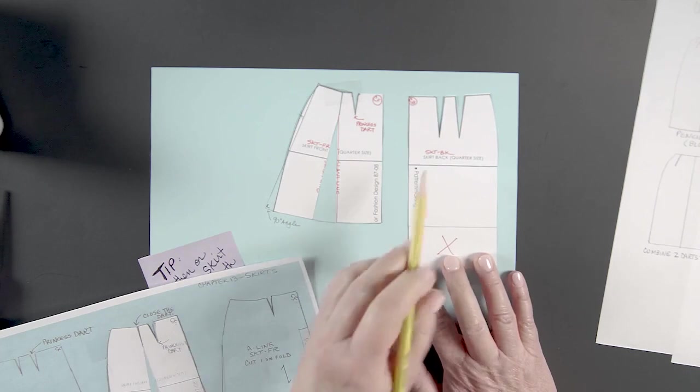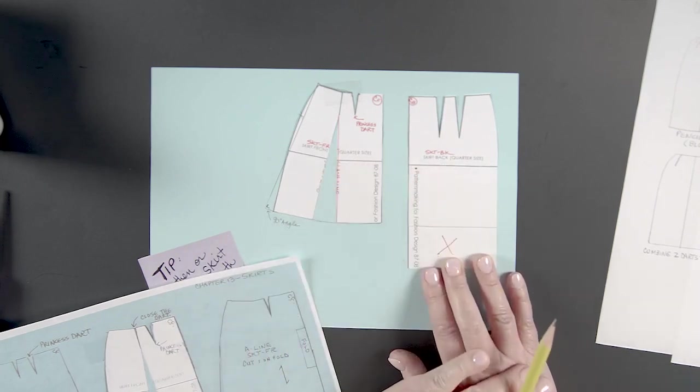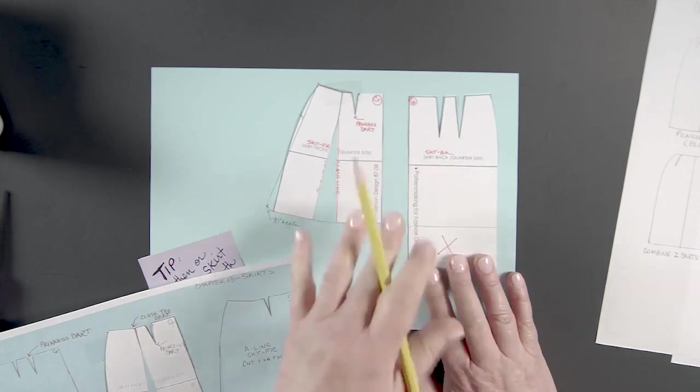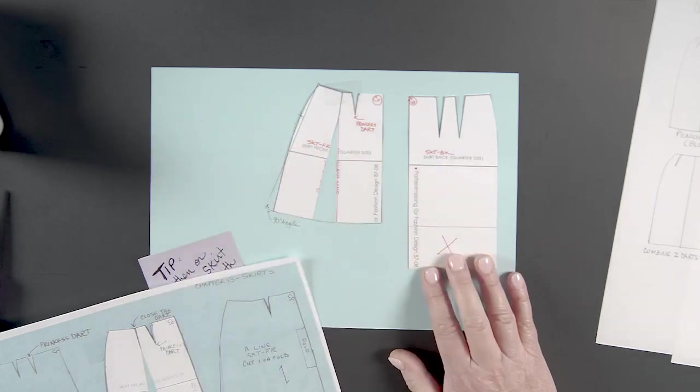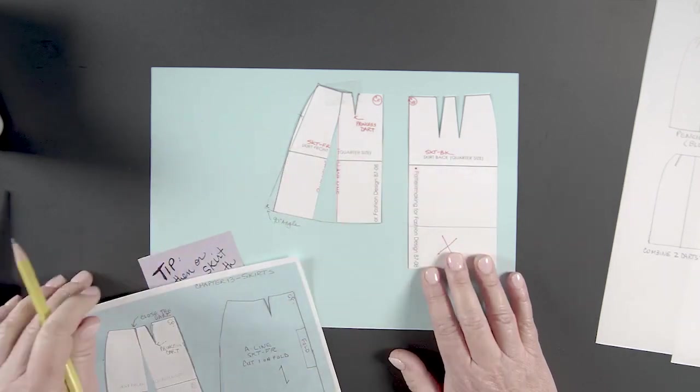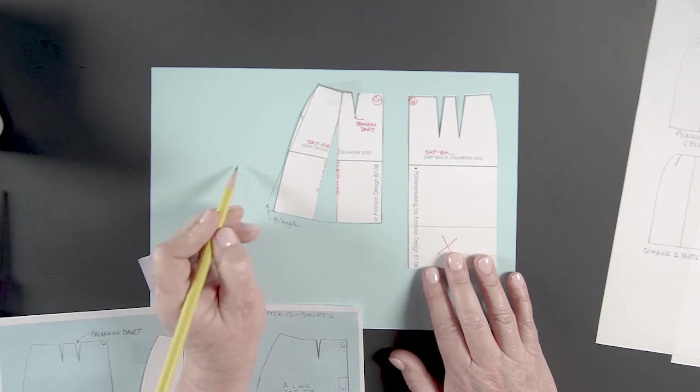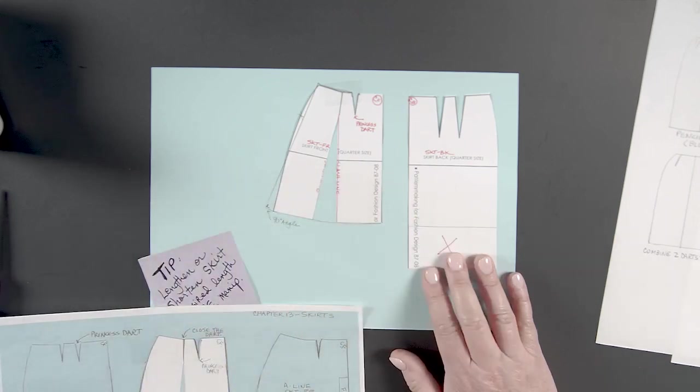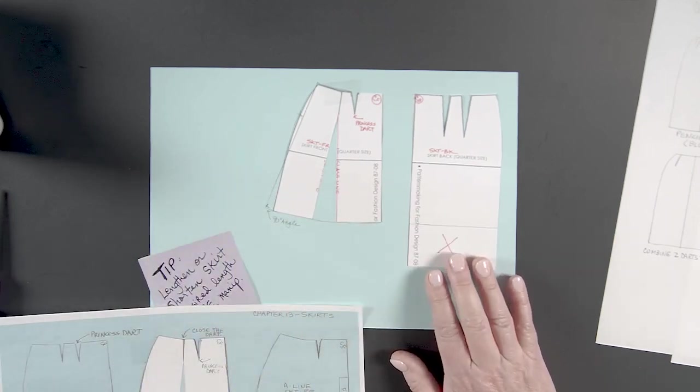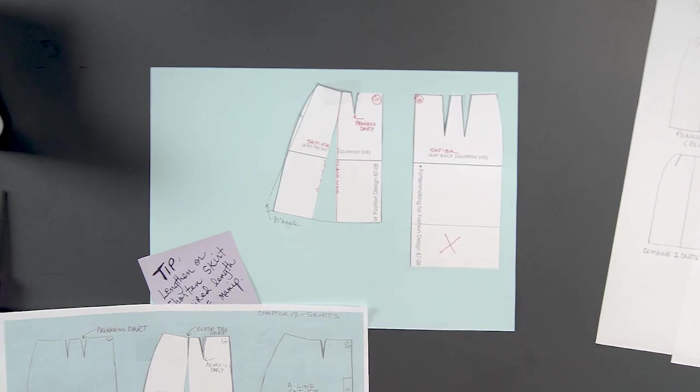So now it's your turn. You do the skirt front and back. You can do the front on one side and the back on the other so that we are clear that you understand the progression of the technique. And that is the A-line flare skirt.